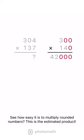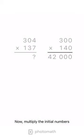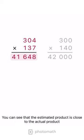See how easy it is to multiply rounded numbers. This is the estimated product. Now, multiply the initial numbers. You can see that the estimated product is close to the actual product.